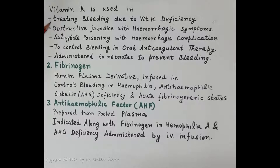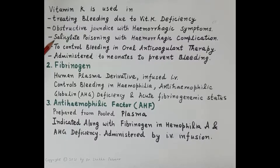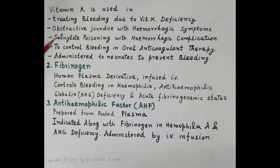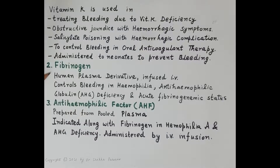Vitamin K is used in treating bleeding due to vitamin K deficiency. It is essential in obstructive jaundice with hemorrhagic symptoms and in salicylate poisoning with hemorrhagic complications, since prolonged high-dose salicylate therapy causes hypoprothrombinemia leading to bleeding. It is also administered when oral anticoagulant therapy exceeds the required dose and causes bleeding, and is given to neonates to prevent bleeding.